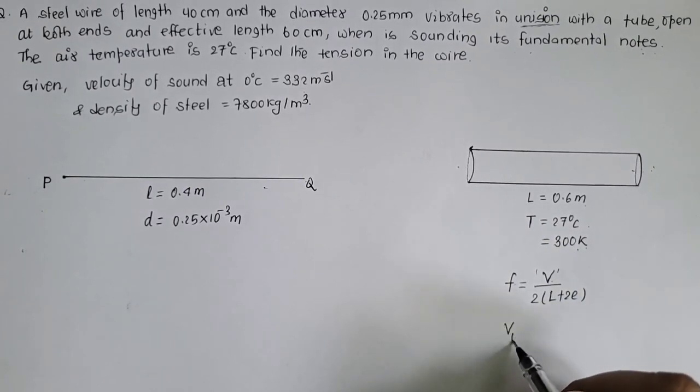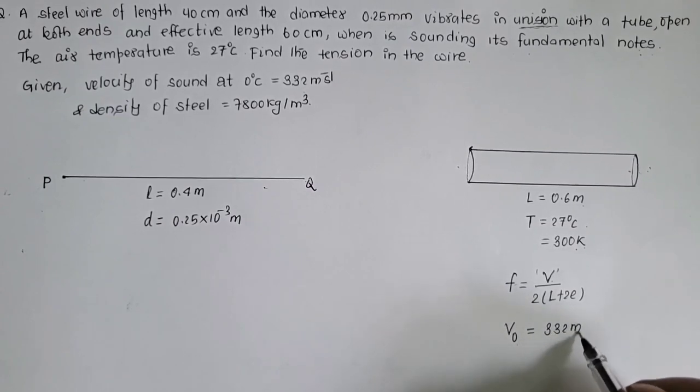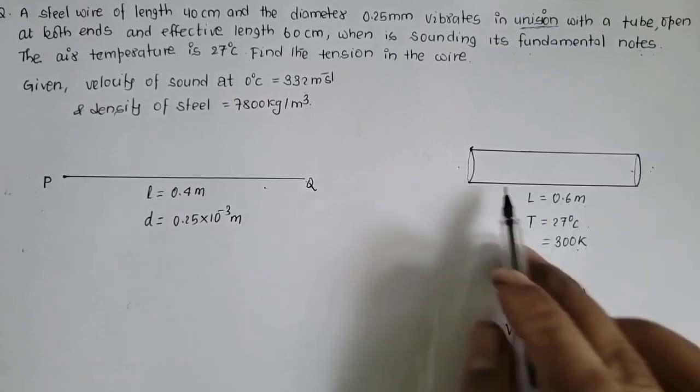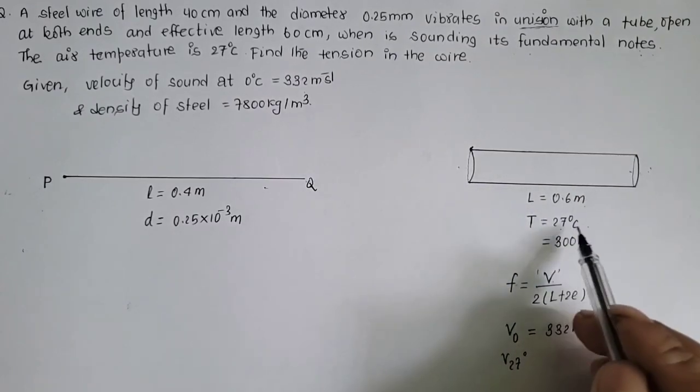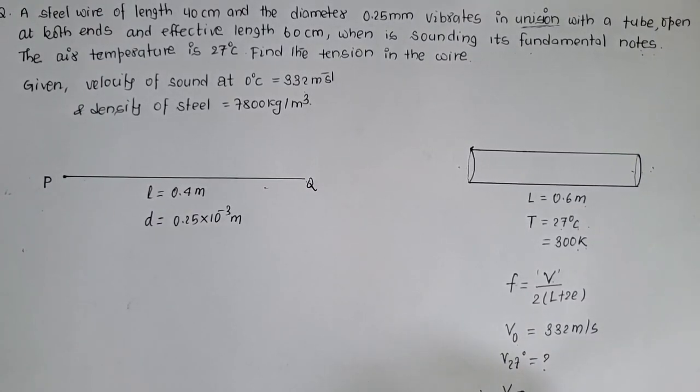Velocity of sound in 0 degree celsius ku value 332 meter per sec. Velocity of sound a 27 degree celsius nikalnu porshak hinna vanne organ pipe vibrate garthayshak 27 degree celsius ma. Velocity of sound lay yeouta temperature vad another temperature ama convert garunshak.